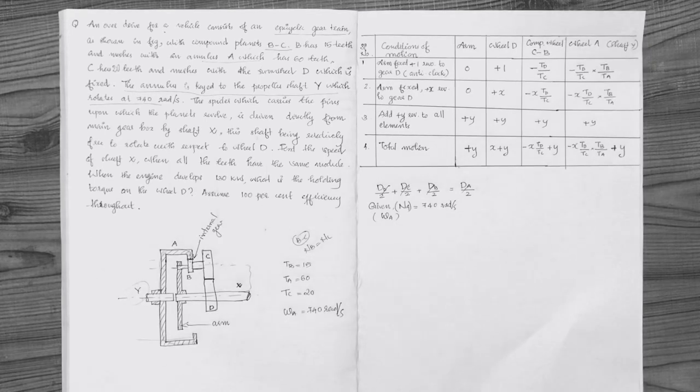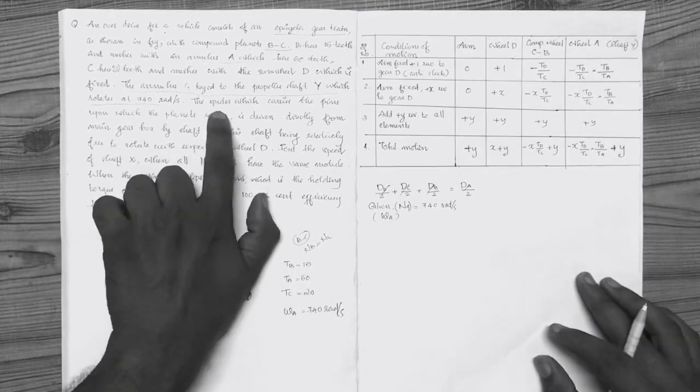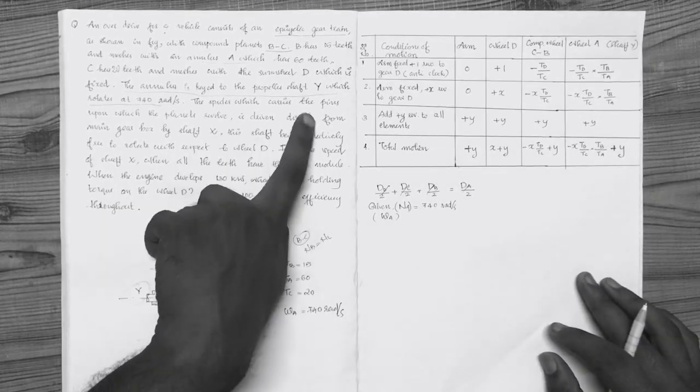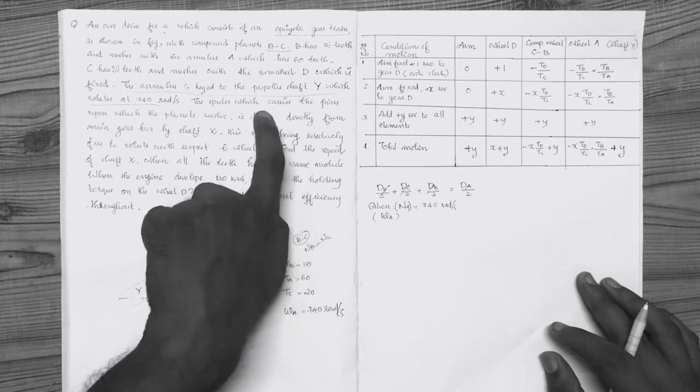The speed of the radian per second is 10. The engine consists of pins on which the planet wheel is driven.